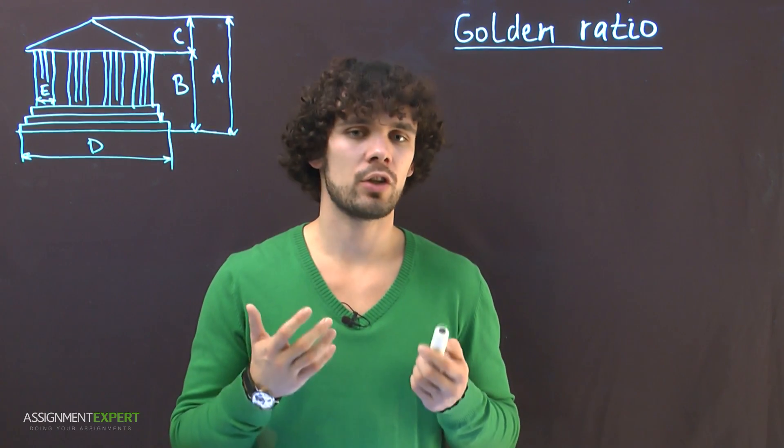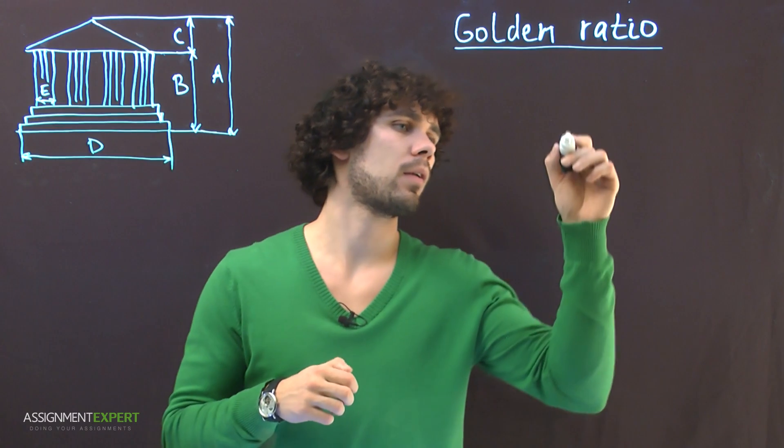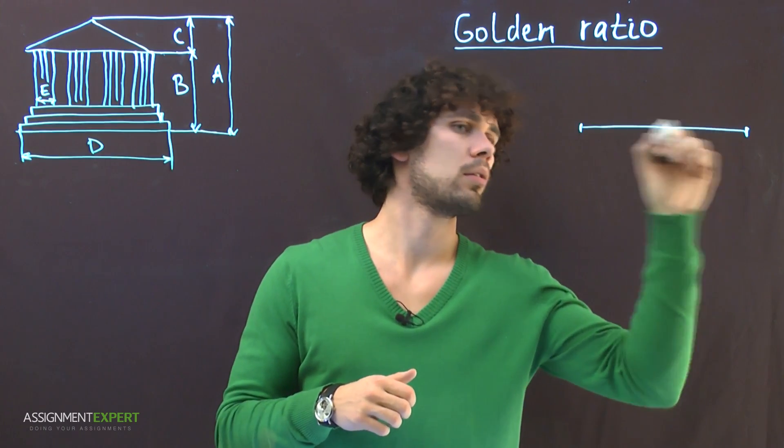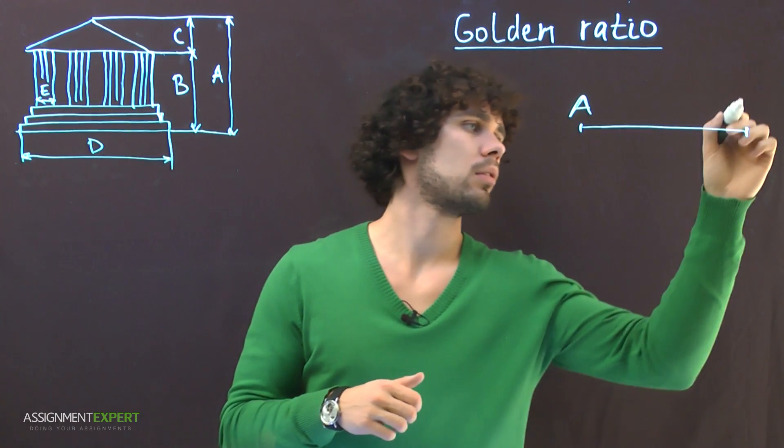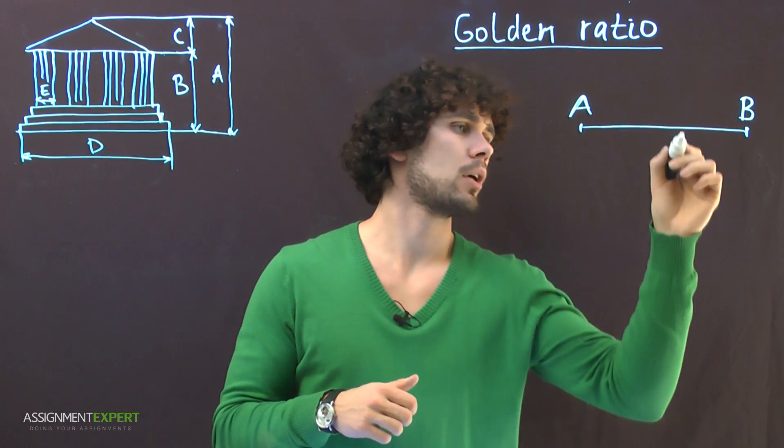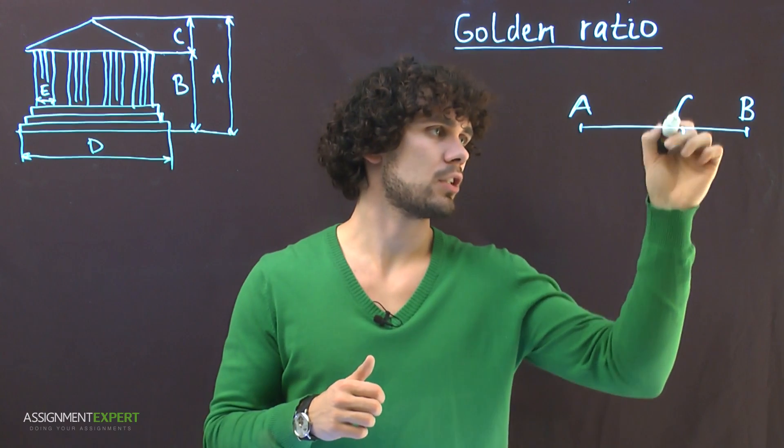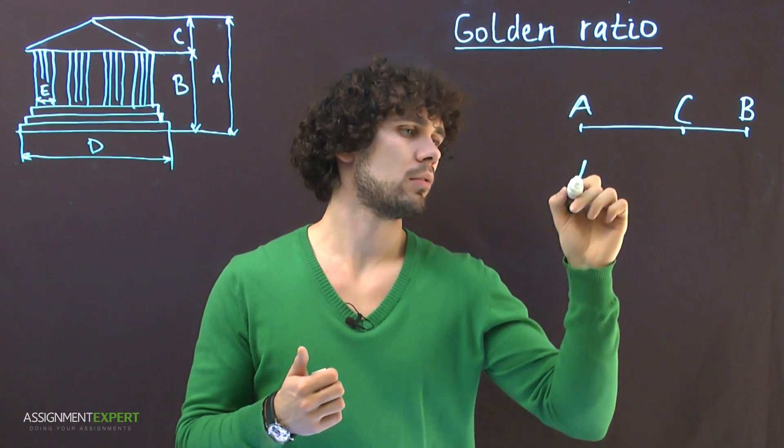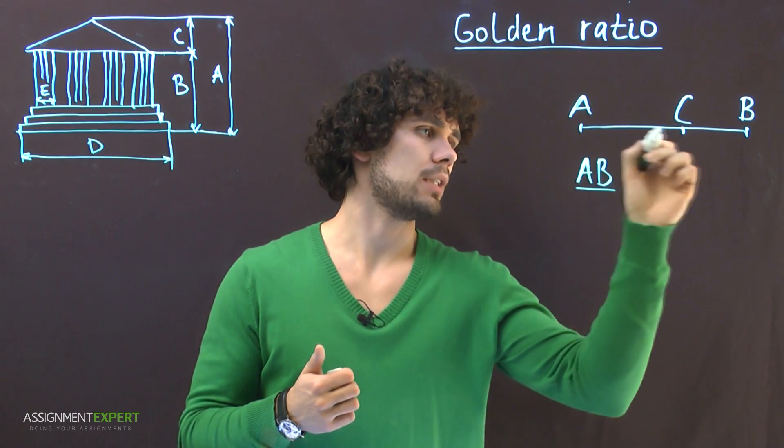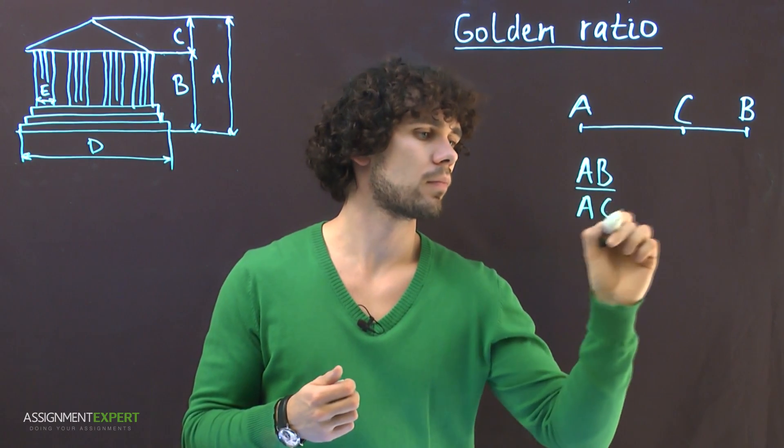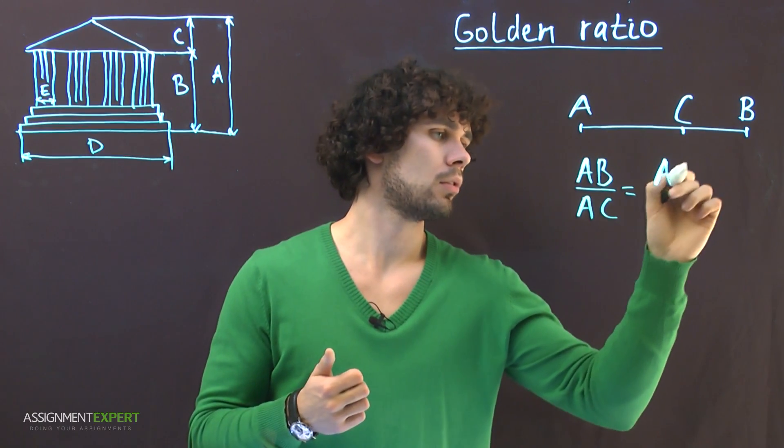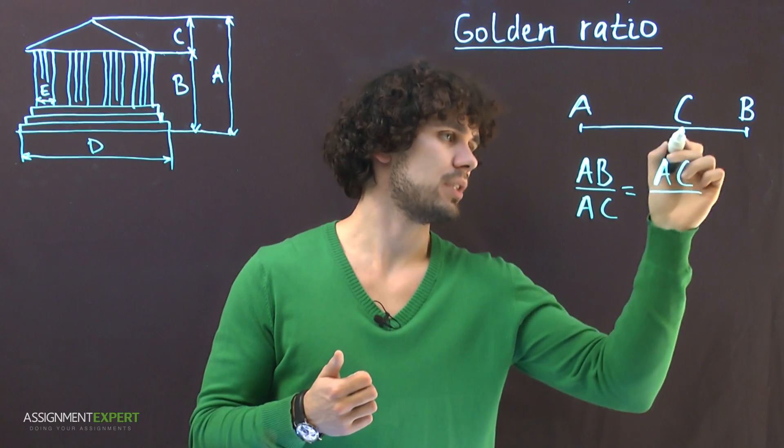But first of all, let's consider an interval. Point C divides interval AB in the golden ratio if AB refers to AC in the same way as AC refers to BC.